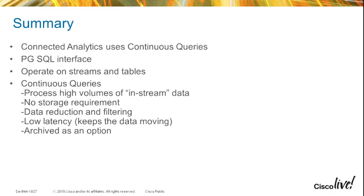To summarize: Connected Analytics uses continuous queries with a PostgreSQL interface. We operate on streams and tables. The continuous queries allow us to consume streaming data as we see fit, rather than consuming all the data — which would be impossible. We can filter data as it comes in, archive as an option, and it keeps latency low while keeping the data flowing.